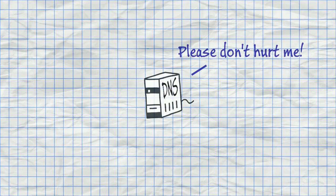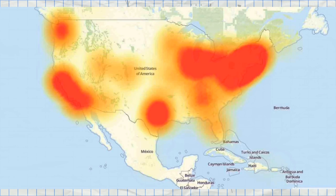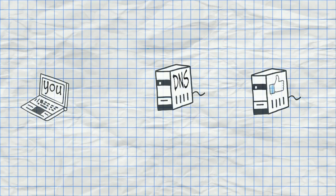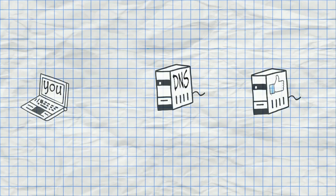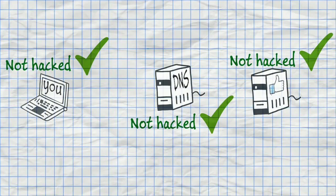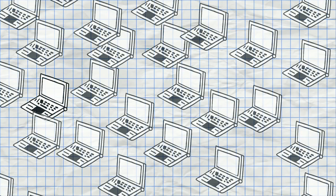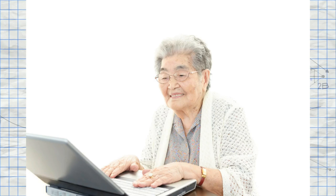Which brings us back to the DNS DDoS attack. Instead of attacking a giant like Amazon or Google directly, the hacker can have the bots attack the DNS. Those machines aren't generally equipped to deal with enormous traffic loads because their job, while important, is pretty lightweight. So if you were one of the millions of people affected, your computer was fine and Facebook was fine — but your computer could no longer reach the DNS to find out how to reach Facebook. The people who were actually hacked were the tens of thousands of clueless users who failed to properly secure their computers.